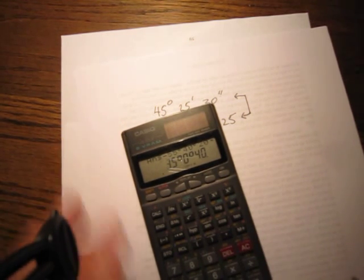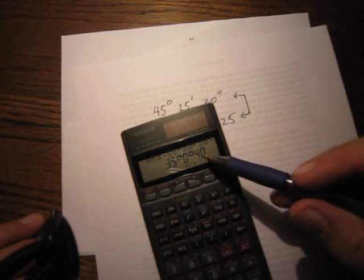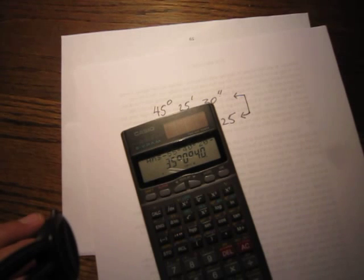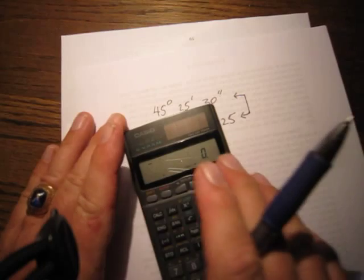We can subtract. Now we're going to subtract. Let's say we subtract 55 degrees, 40 minutes, and 20 seconds. It gave us an answer of 35 degrees, 0 minutes, and 40 seconds. So that's right. So this is a real handy calculator. I highly recommend it. You don't have to be converting back and forth from decimal points.